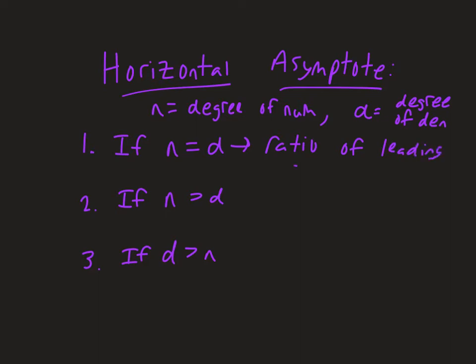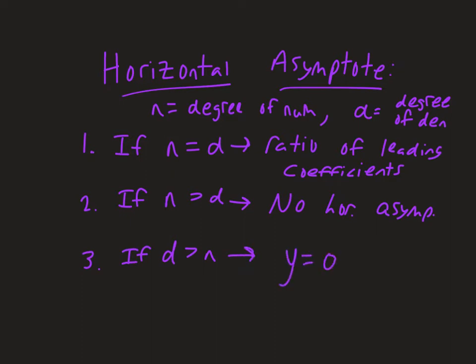The ratio of leading coefficients can be a fraction or a whole number — whatever it is, that's your horizontal asymptote. When the numerator's degree is higher, there is no horizontal asymptote, as the function approaches infinity. When the denominator has the higher degree, the horizontal asymptote is at y equals zero.